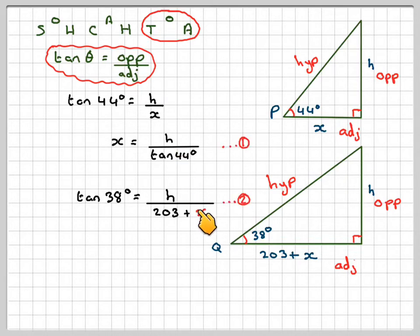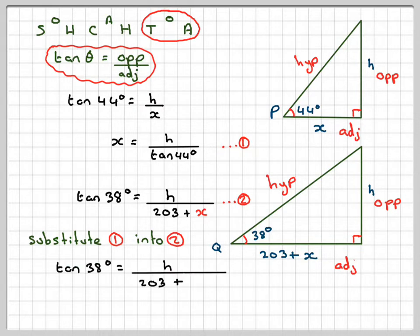We'll substitute 1 into 2. So instead of x, I'm now going to write h over tan 44. So we get tan of 38 is h over 203 plus x, which is now h over tan 44.